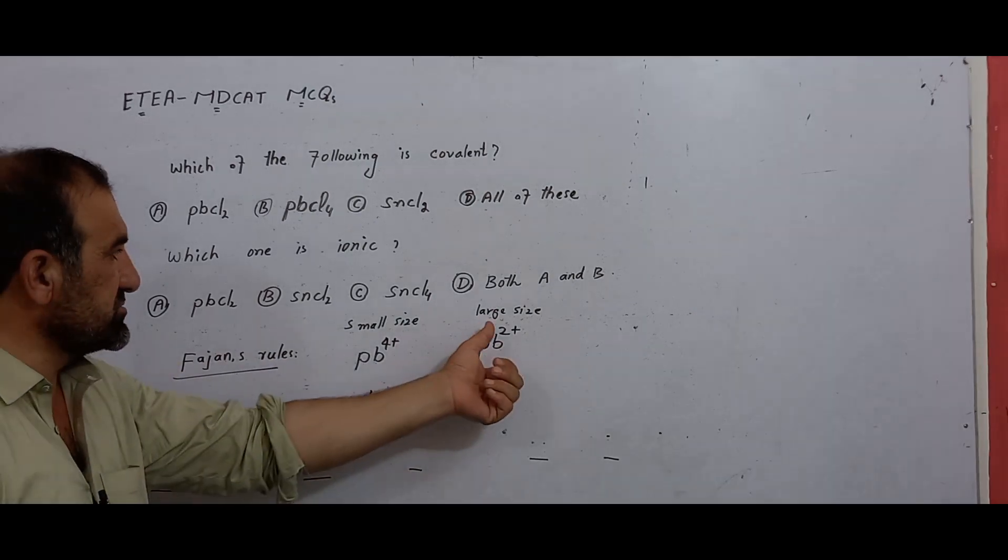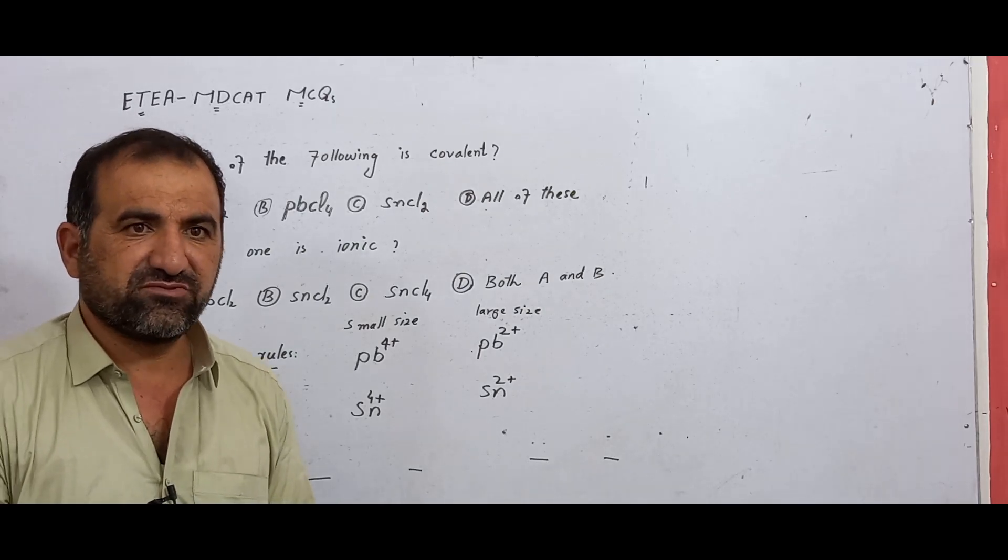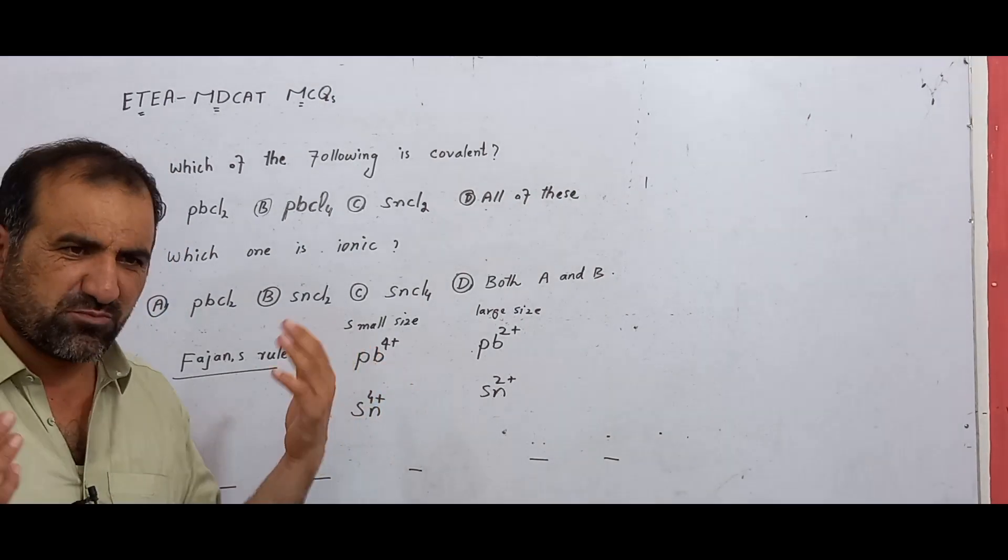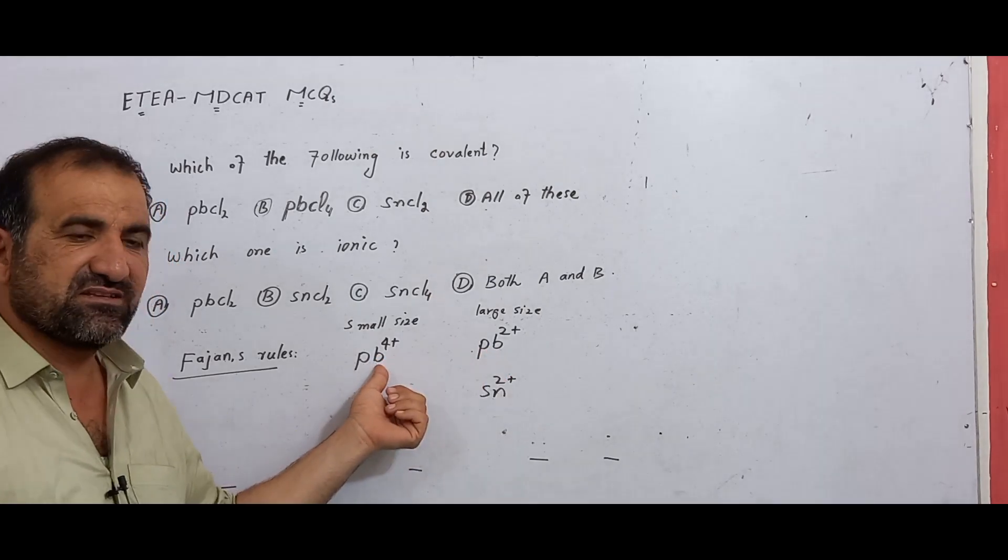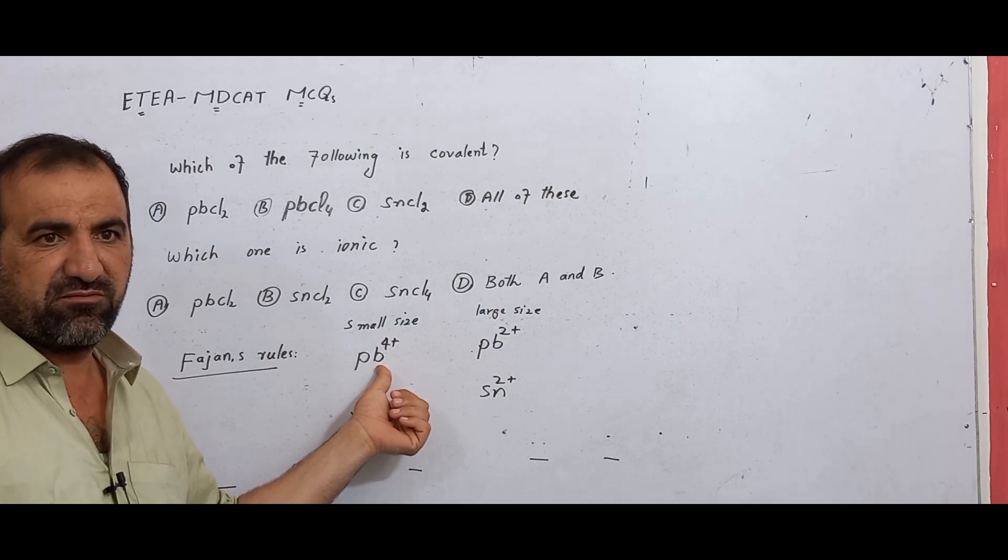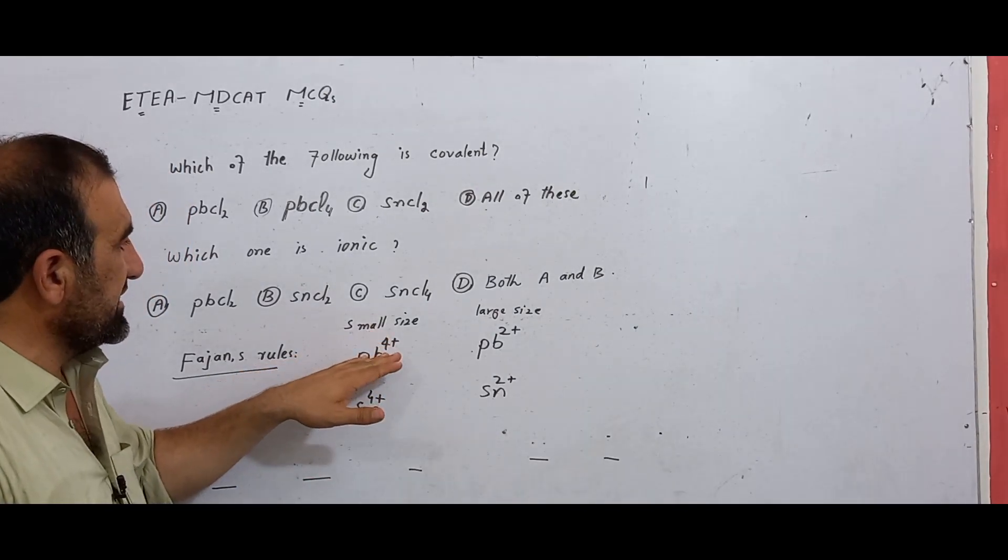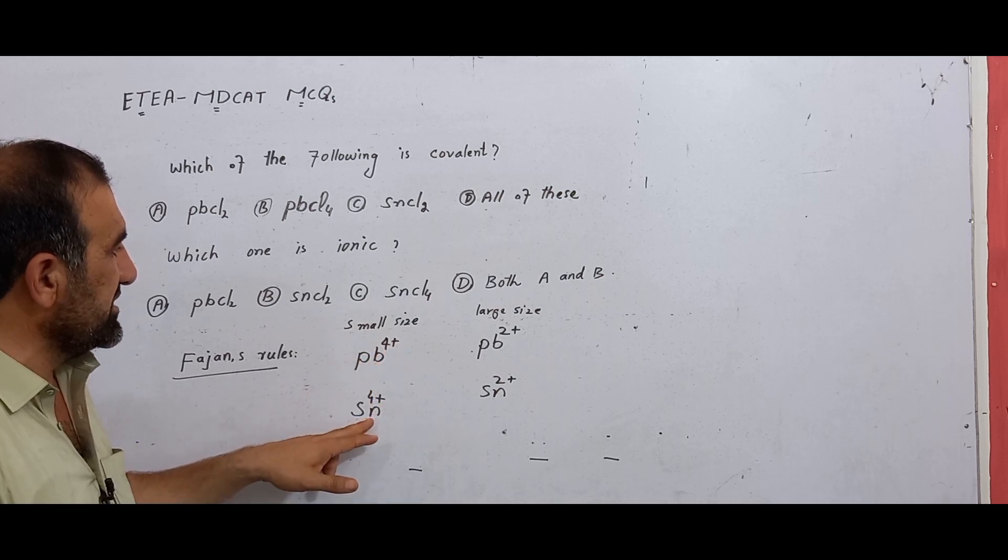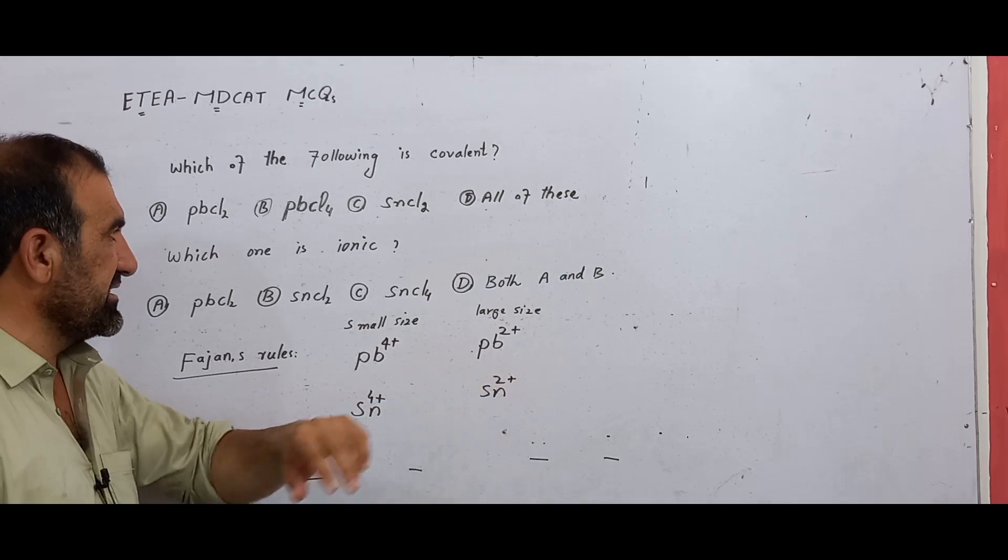Pb plus two has larger size and forms ionic bonds. Pb plus four has higher polarizing power, so it can polarize and form covalent bonds more easily than Pb plus two, which forms ionic bonds.